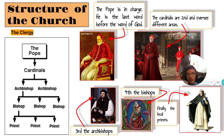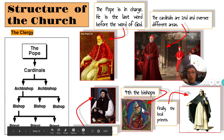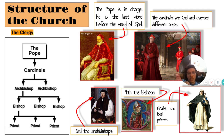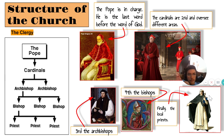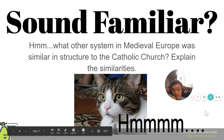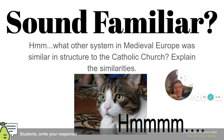Here we have the structure of the church. At the very top of the clergy there was the Pope, who was the last word before the word of God. Below the Pope were the cardinals — second in charge, overseeing different areas of the church. Third were the archbishops, fourth were the bishops, and at the bottom of the clergy were the local priests. Does any of this sound familiar? What other system in medieval Europe was similar in structure to the Catholic Church? Use the paradigm to explain the similarities.